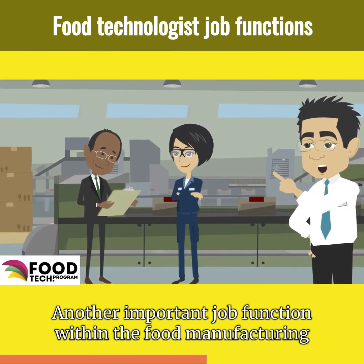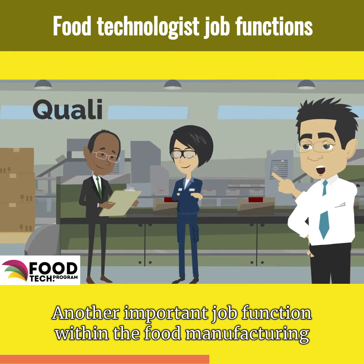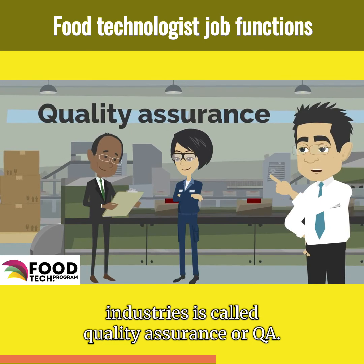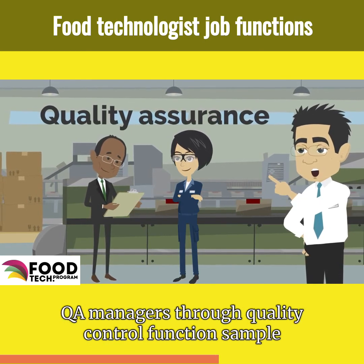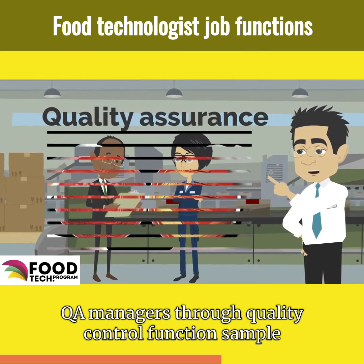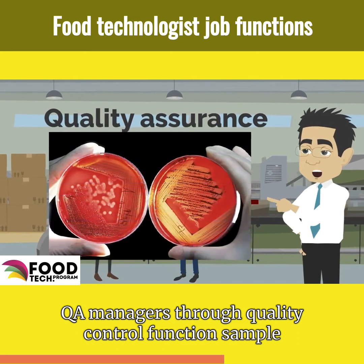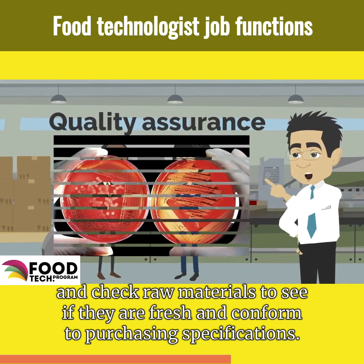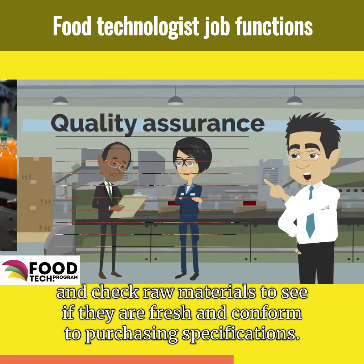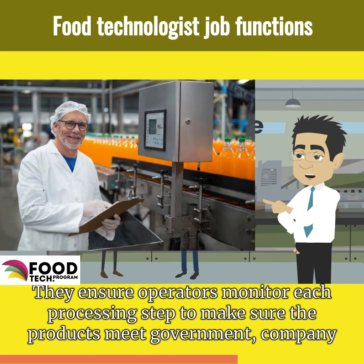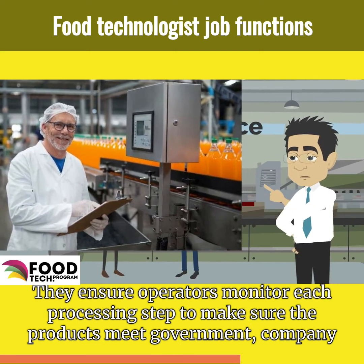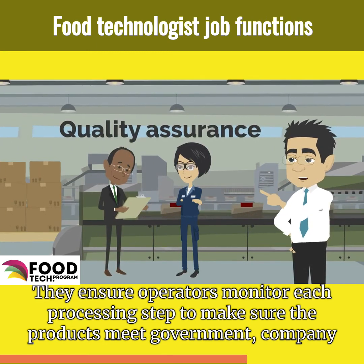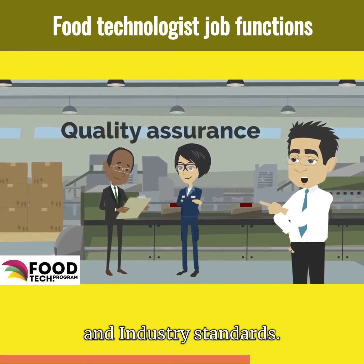Another important job function within the food manufacturing industry is called quality assurance, or QA. QA managers, through quality control functions, sample and check raw materials to see if they are fresh and conform to the purchasing specifications. They ensure operators monitor each processing step to make sure the products meet government, company, and industry standards.